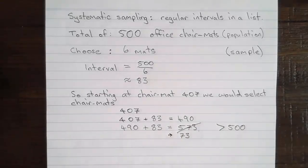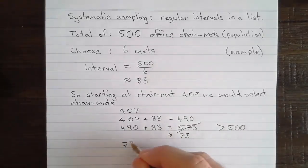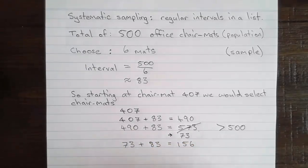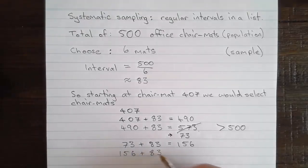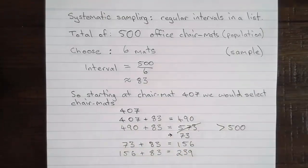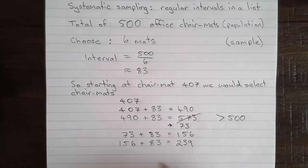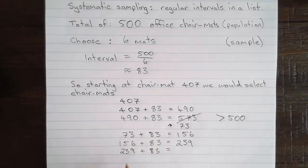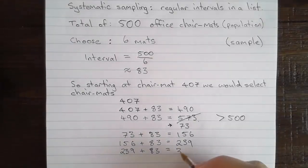We'll cross that one out so we don't make the mistake. Then again, 73 plus our regular interval of 83 will give us 156. 156 plus 83 is going to be equal to 239. And finally, 239 plus 83 will be equal to 322.